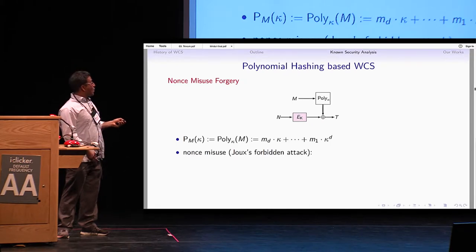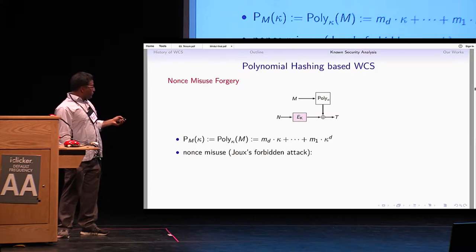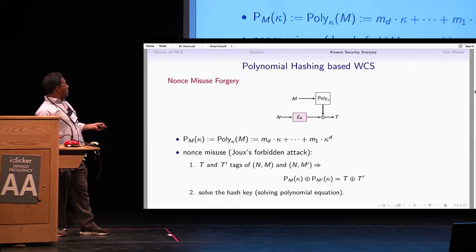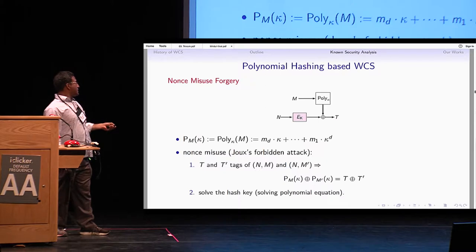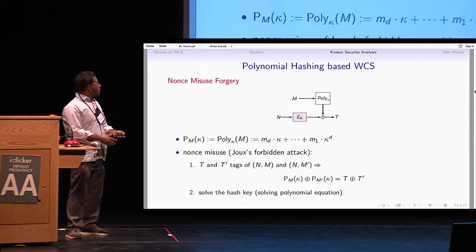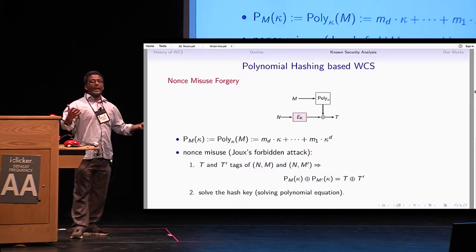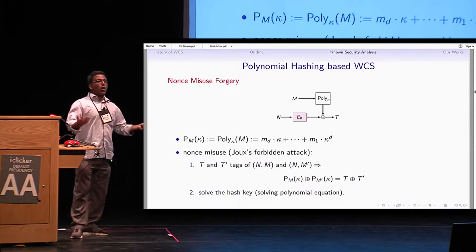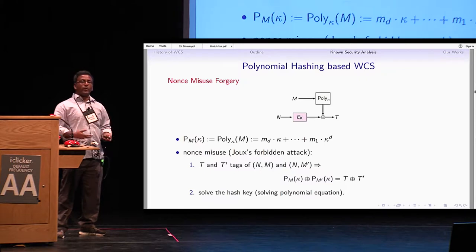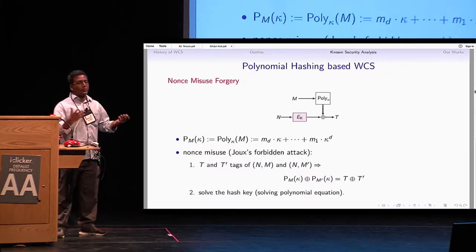What happens if the nonce repeats? If the nonce is repeated, there is a forgery attack that can recover the hash key. You collect two tags T and T' for two messages M and M' under the same nonce, then XOR them — the nonce cancels. What you get is a polynomial in the hash key. You solve the polynomial, find its roots, and with high probability recover the hash key, enabling a forgery.